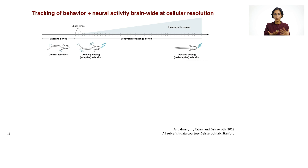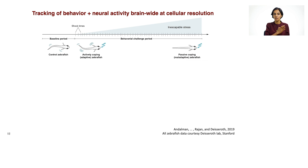Let me tell you about one example in which our approach of building neural network models, training them to match data directly, and then reverse engineering them has led to mechanistic discoveries that couldn't have been obtained experimentally alone. This is in collaboration with Karl Deisseroth's lab at Stanford. Aaron Andalman, a talented postdoc in Karl's lab, did the following experiment. Larval zebrafish are head-fixed and then exposed to a slight electric shock over a long period of time.